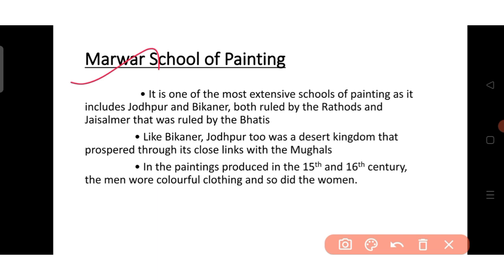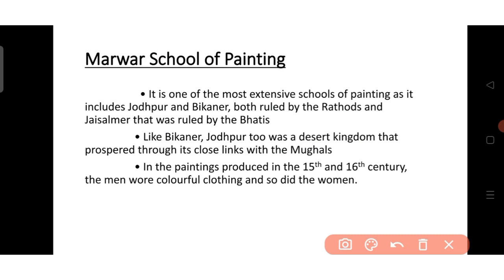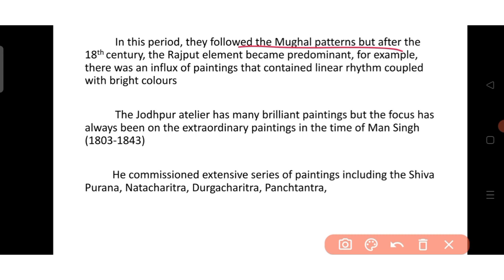The Marwar school of painting is the most extensive school, including Jodhpur and Bikaner. Both Jodhpur and Bikaner were ruled by the Rathods, and Jaisalmer was ruled by the Bhattas. Like Bikaner, Jodhpur is also a desert kingdom that prospered through its close link with the Mughals. In paintings from the 15th and 16th century, men and women wore beautiful colourful clothing. They followed Mughal patterns, and after the 18th century the Rajput element became dominant.